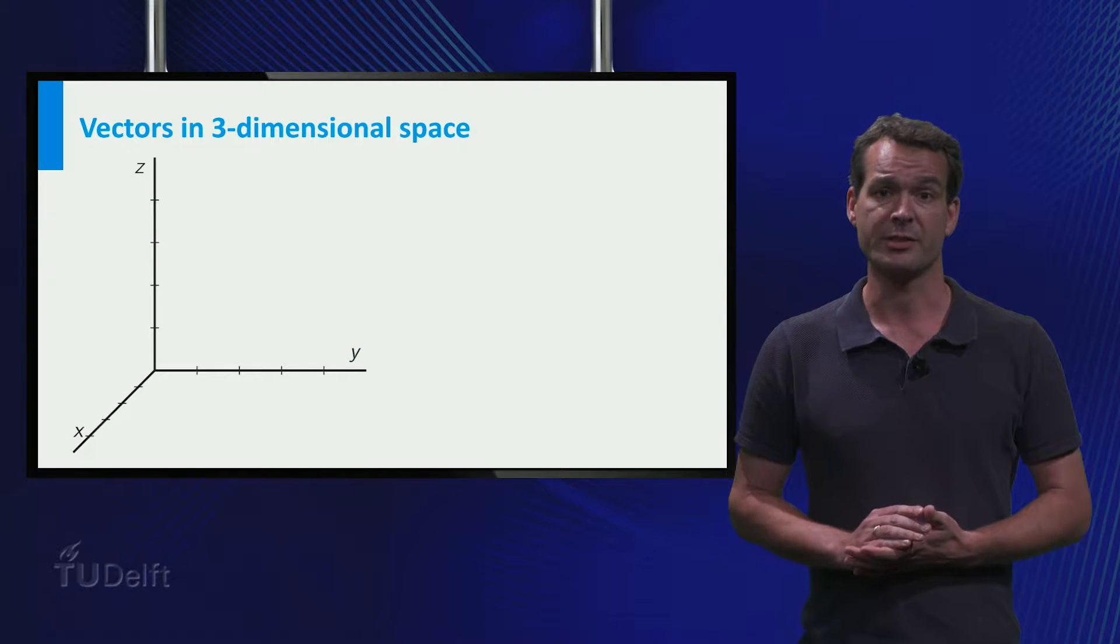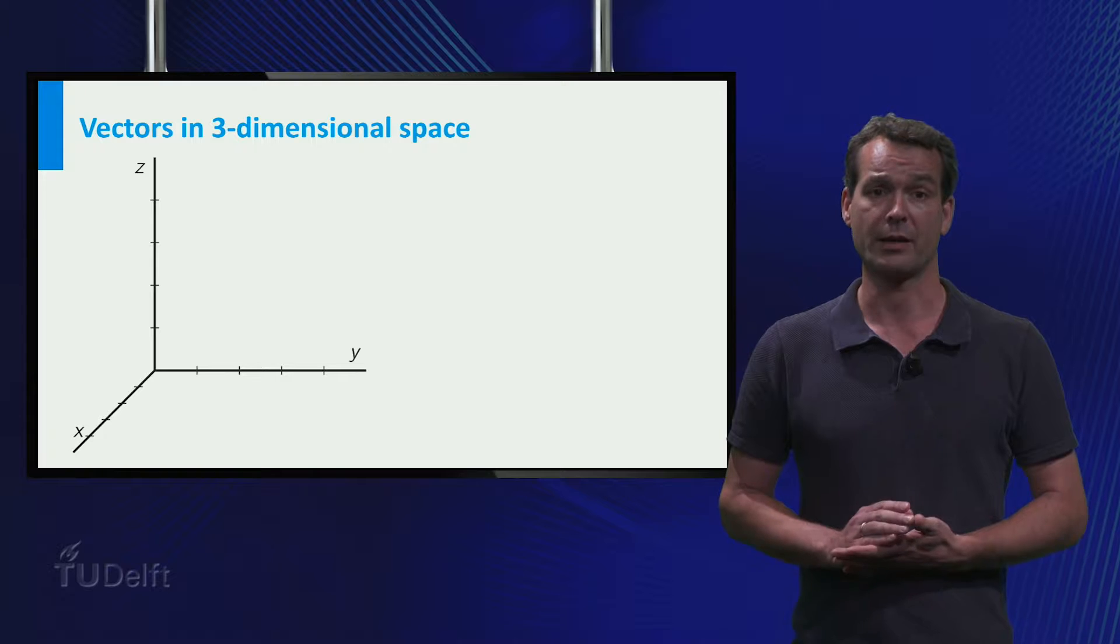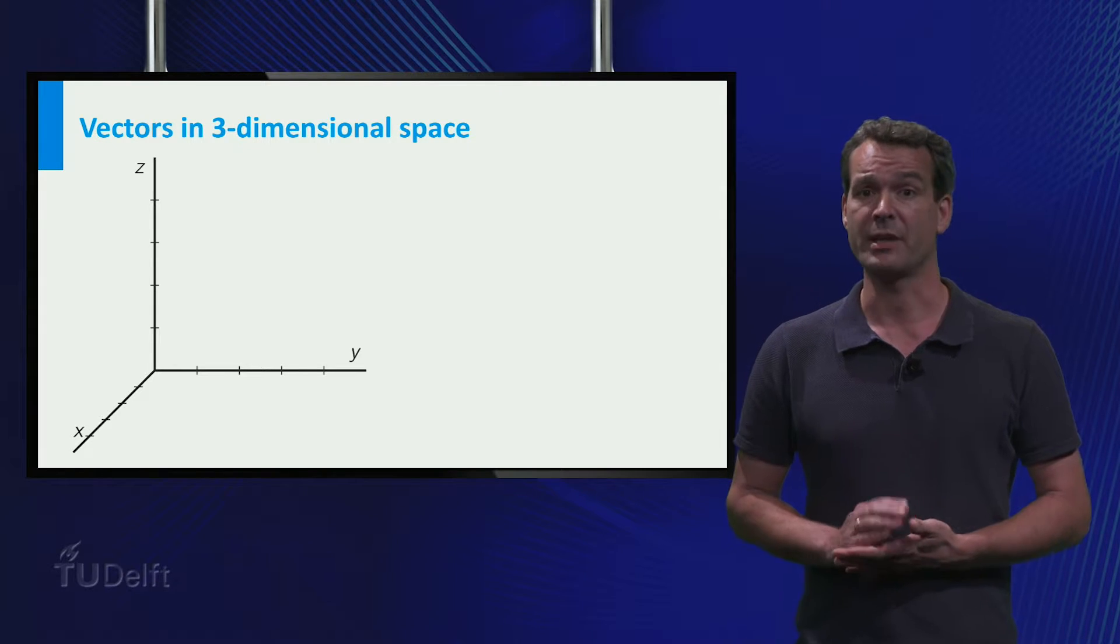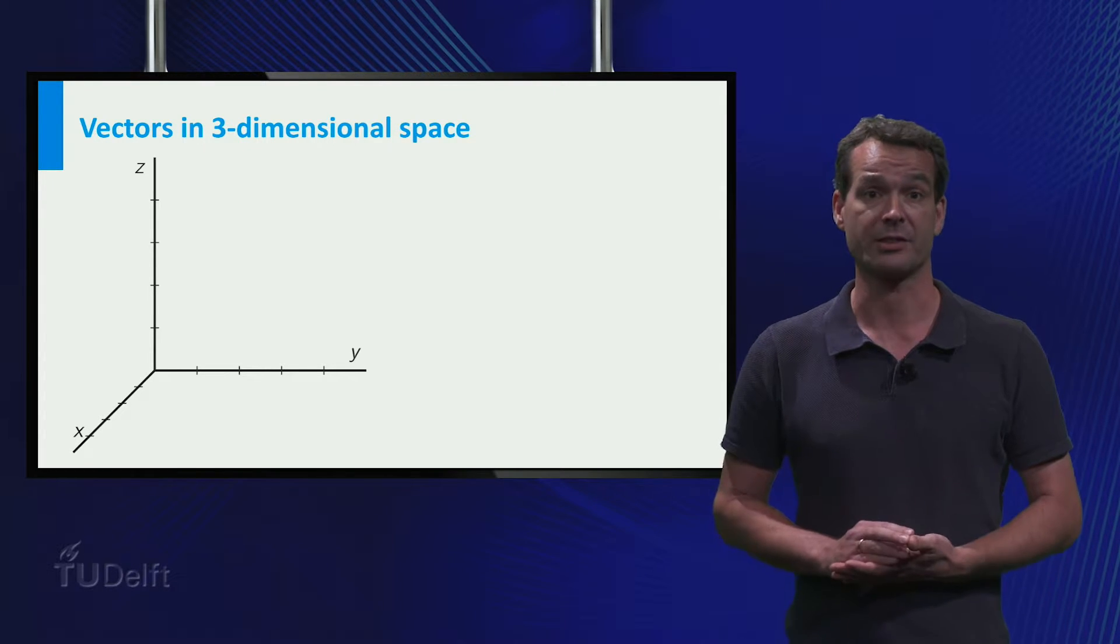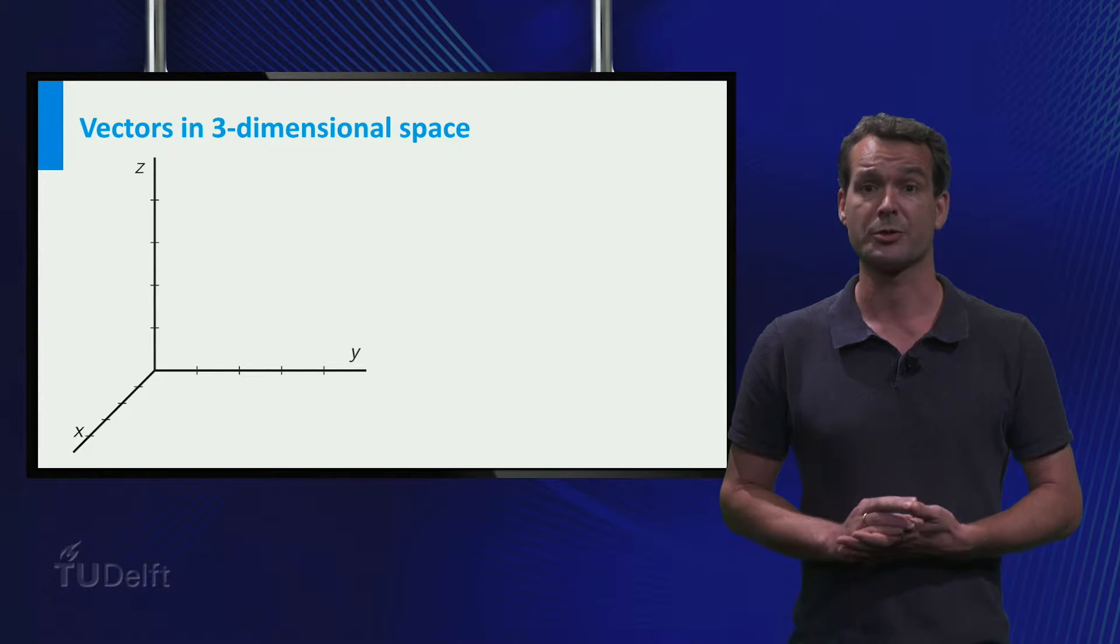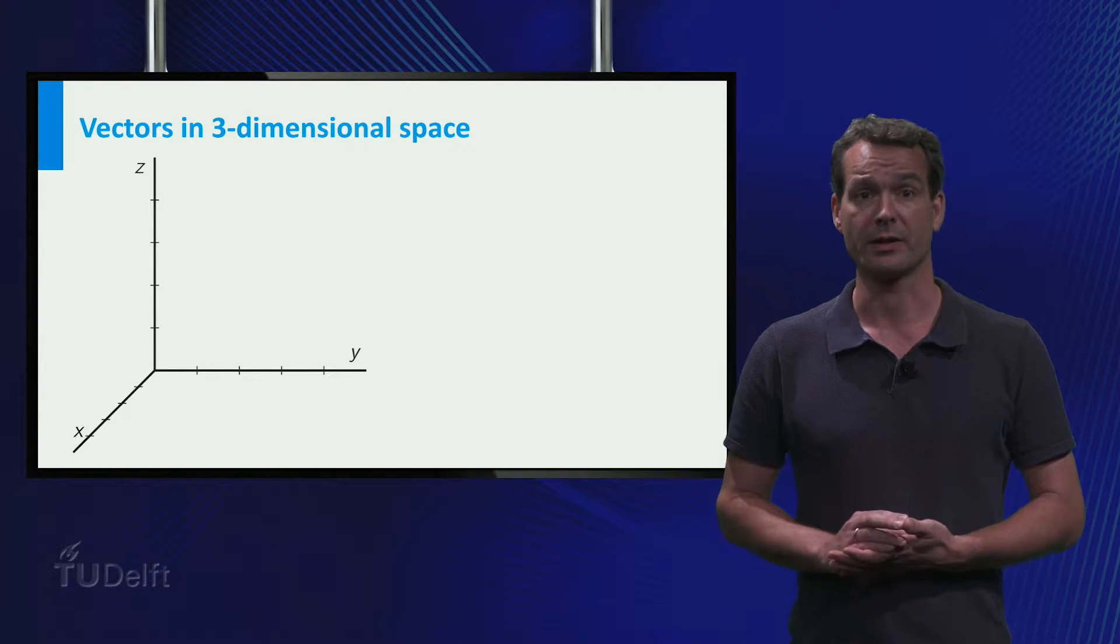In two dimensions we have an x and a y direction. In three dimensions there is also a z direction, so we can represent points in three-dimensional space with three coordinates.